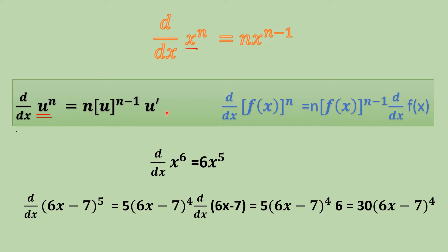This statement can also be stated as: the derivative of f(x) raised to the power n will be n in the beginning, then f(x) as it is raised to the power n minus 1, multiplied by the derivative of the function. The key point is that f(x) will be copied as it is — you will not change the function at this stage. Only the power gets reduced by 1, and then you calculate the derivative of this function.